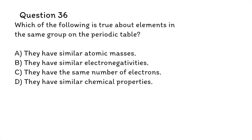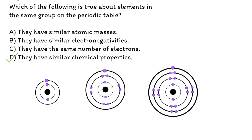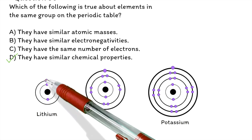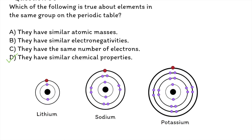Question 36: Which of the following is true about elements in the same group on the periodic table? A. They have similar atomic masses. B. They have similar electronegativities. C. They have the same number of electrons. D. They have similar chemical properties. The correct answer is D. Elements in the same group on the periodic table have the same number of valence electrons, which determines their chemical properties. Valence electrons are the electrons in the outermost shell of an atom. For example, elements in group 1 such as lithium, sodium, and potassium all have one valence electron and are highly reactive. Check out UltimateGED.com for more lessons on atomic structure.